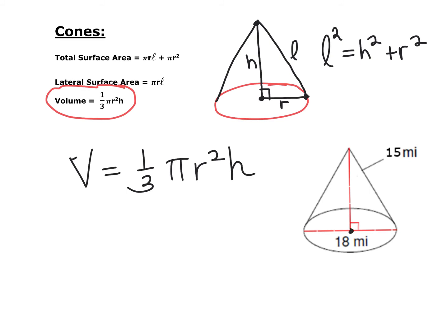Our radius is half of the diameter, so that's going to be 9. And our height is this distance right here. But what's labeled is the L. So we need to figure out what our height is.